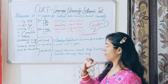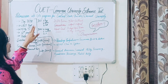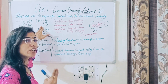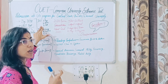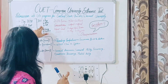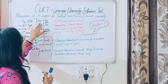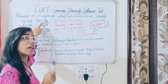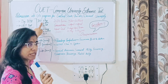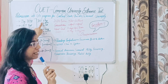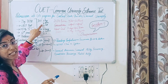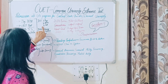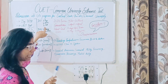Yeh tha overall summary. Ek example dekhiye — ho sakta hai ki har college ka CUET karane ka apna khud ka respective pattern hota hai. For example, D.U. — Delhi University — CUET ka jo exam karata hai, toh woh kehta hai ki humein ek language chahiye, lekin woh language English hi honi chahiye. Yani aap doosri language nahi le sakte. Agar aap science mein ho, toh aapko Physics, Chemistry aur Math lena hoga.